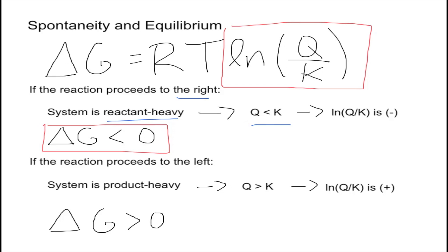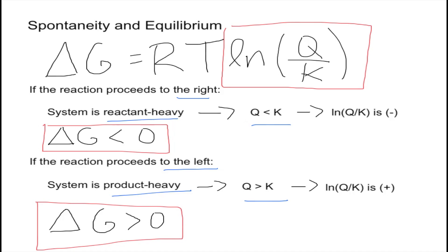Case number two: our reaction is proceeding to the left, so the system is product heavy. This means Q will be greater than K. Plugging that into the equation, the denominator is going to be smaller than the numerator, giving us a positive number when we compute the logarithm, meaning Delta G will also be positive.